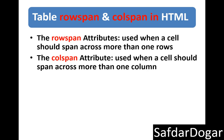The rowspan attribute is used when a cell should span across more than one row. When you use rowspan, one row can span into two, three, four, or five rows.